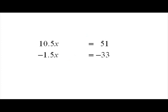That leaves us with 10.5x is equal to 51 on the top, and negative 1.5x is equal to negative 33 on the second equation. Now, remember, we're adding. So we're going to draw a line here to make it easier to see, and we're going to add from top to bottom.